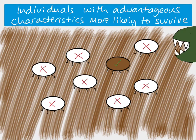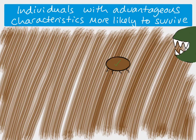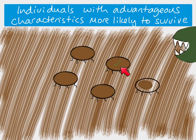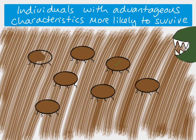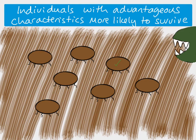The individual with the more advantageous characteristics is more likely to survive. In this environment the brown individual had the advantageous characteristic, so the white ones have all gone. This individual is now able to reproduce, and because the reason it's brown is because of the alleles it has — its genotype — its offspring will also inherit those genes and will also have that brown color.